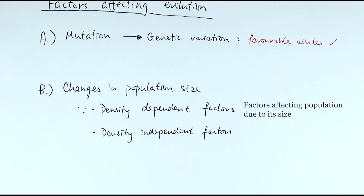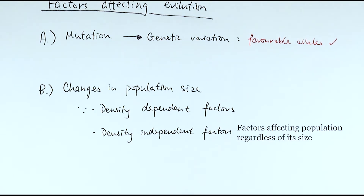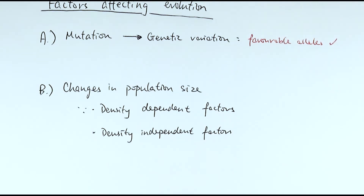For example, the larger the population the more intense the competition would be, or the larger the size of the predators then it would have a direct impact on the population size of the prey. For the density independent factors, these are things that would affect the population size regardless of its original size — things like natural disasters and climate change. It doesn't matter how many individuals you have to begin with because everyone is going to be affected.